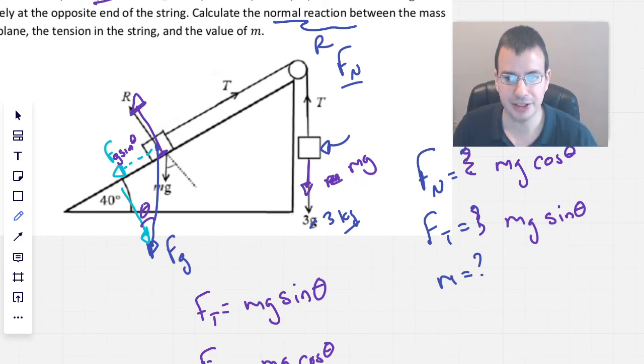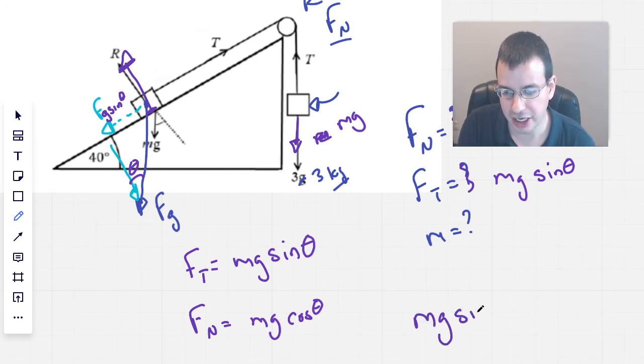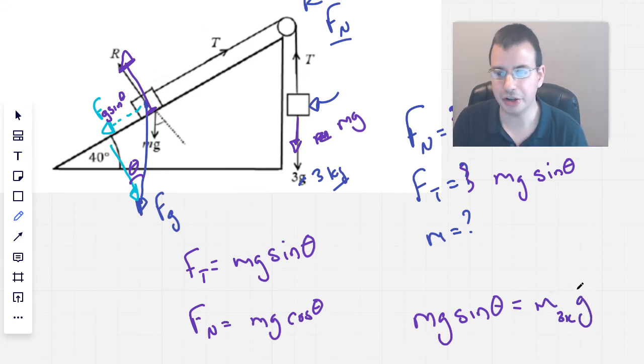So if we write out this balance, setting the two equal to each other, over here we're going to have mg sine of theta equals m, I'm going to call this three kilogram m, times g. You can also say sine of theta as well, where the theta in this case would just be 90 degrees, but mg straight down.